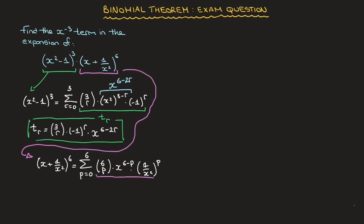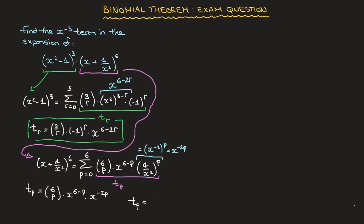The general term of this binomial is t(p). We simplify by noting that 1 over x squared raised to the power of p equals x to the power of negative 2 raised to the power of p, which equals x to the power of negative 2p. So t(p) equals the binomial coefficient 6p times x to the power of 6 minus p times x to the power of negative 2p. Multiplying the powers of x by adding exponents gives t(p) equals the binomial coefficient 6p times x to the power of 6 minus 3p.